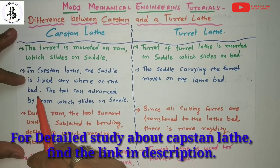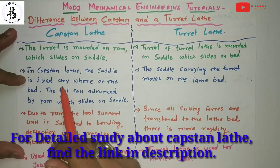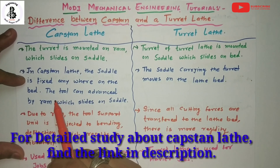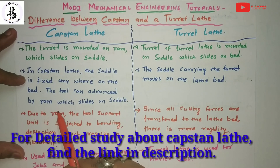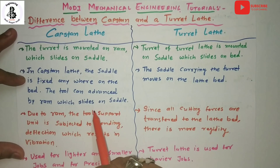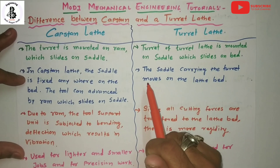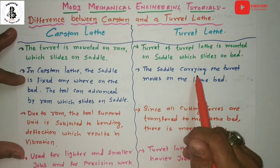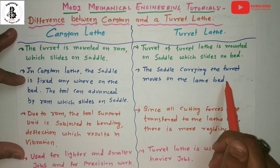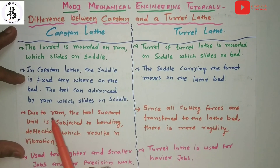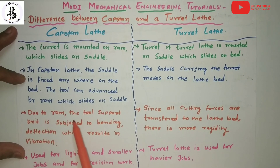In the case of the capstan lathe, the saddle is fixed onto the bed, so the tool can be advanced only by the ram which slides onto the saddle. But in the case of the turret lathe, the saddle carrying the turret moves along the lathe bed.